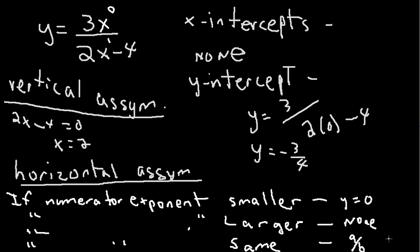Your horizontal asymptote would simply be the coefficients. So, if this were 1 and this were 1, my horizontal asymptote would be 3 over 2.